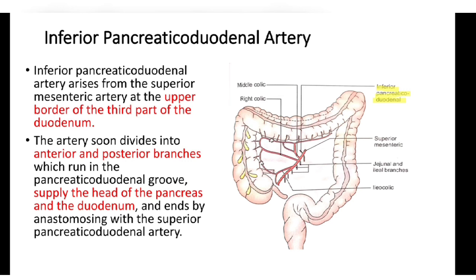The inferior pancreaticoduodenal artery arises from the superior mesenteric artery at the upper border of the third part of the duodenum. The artery soon divides into anterior and posterior branches, which run in the pancreaticoduodenal groove, supply the head of the pancreas and the duodenum, and end by anastomosing with the superior pancreaticoduodenal artery.